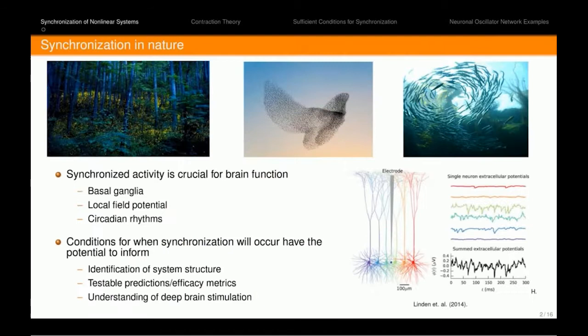As we've seen in several of the slides before, synchronization is a very common feature in many natural systems. In particular, we're very interested in how synchronized activity plays a role for brain function. Excess or too little synchronization can cause debilitating brain disorders such as Parkinson's disease and epilepsy. If we have a better understanding of conditions for when synchronization is guaranteed to occur, that has the potential to inform things like identification of system structure, the ability to make testable predictions, improvement of existing efficacy metrics, as well as understanding existing techniques such as deep brain stimulation.